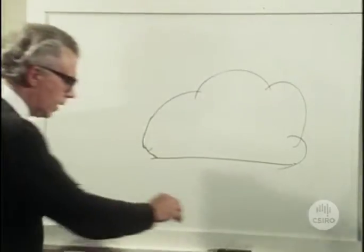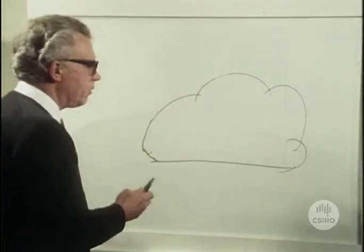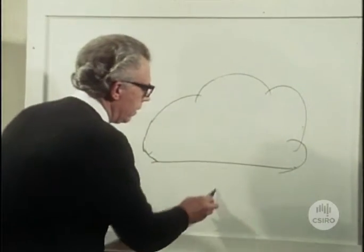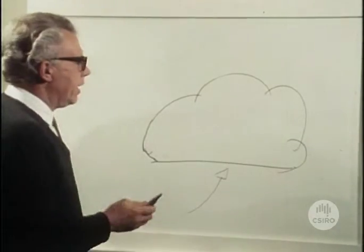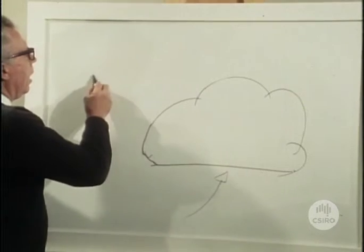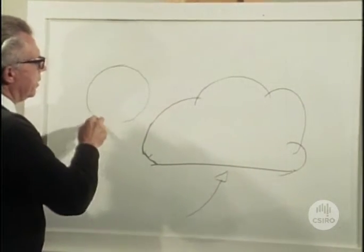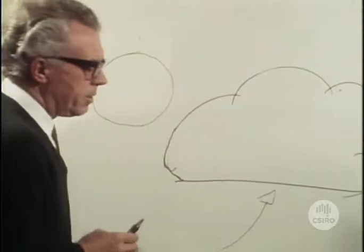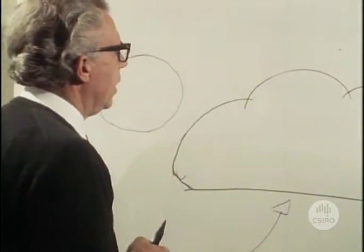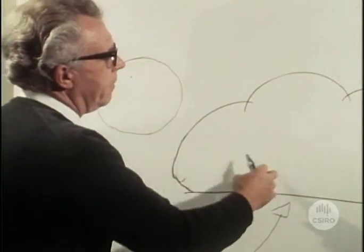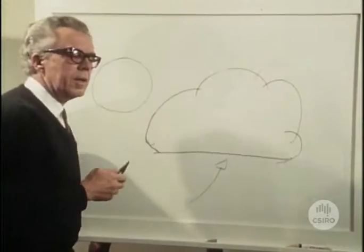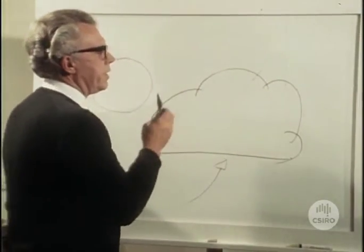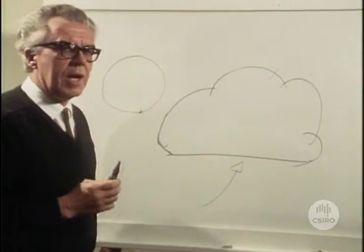To understand how silver iodide can induce a cloud to rain, it's first of all necessary to know something of the nature of clouds themselves. The sort of cloud that we're interested in is formed in the first place by air rising up, and the moisture cooling and condensing in the form of minute water droplets. If we could take a microscope and look at a portion of this cloud, we would find that these droplets are so tiny that it requires about a million of them to form one raindrop. They're so light that they appear to float in the air, going up and down with the air currents. The temperatures in these clouds are frequently below freezing, but the droplets are still in the form of liquid water.